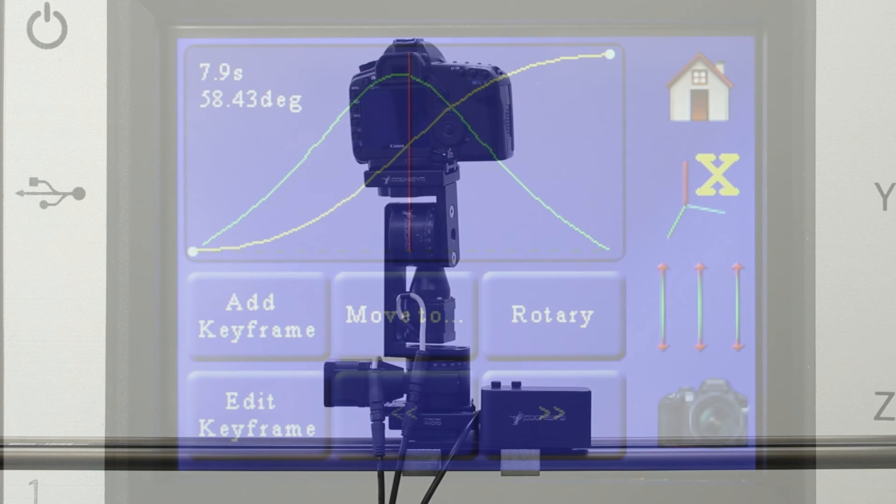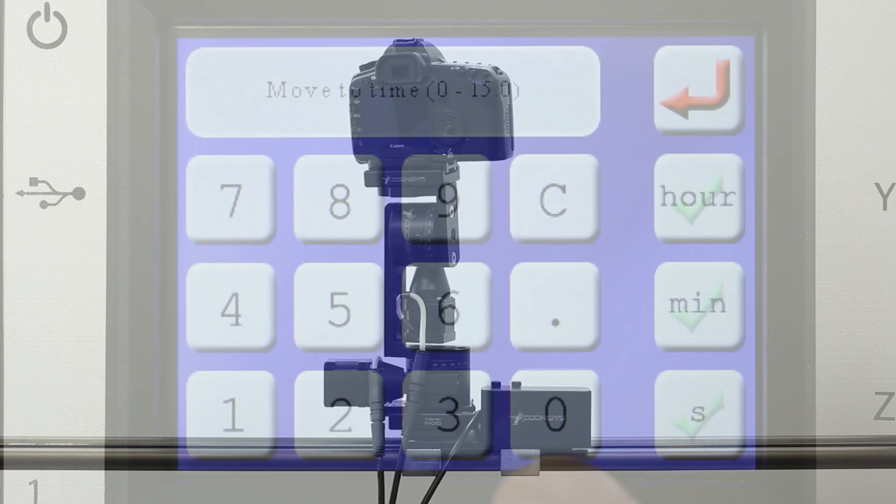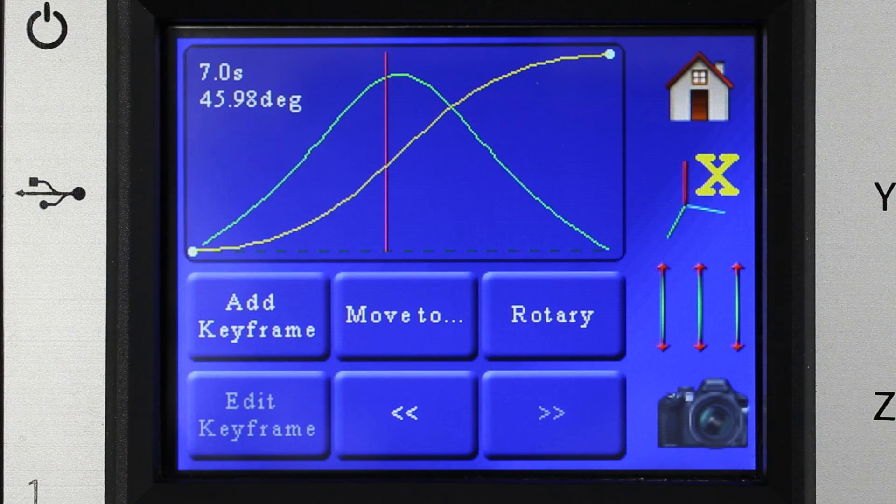And if we want to move to a specific time we can also move to a time of let's say seven seconds. So we have pretty decent flexibility there for getting to where we want to be. It's nice to check your framing at different points so you don't have to go through a whole move if it's a lengthy move. This way you can set it up and double check to make sure everything looks good from start to finish.